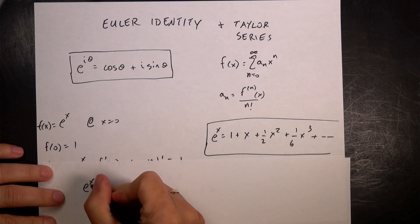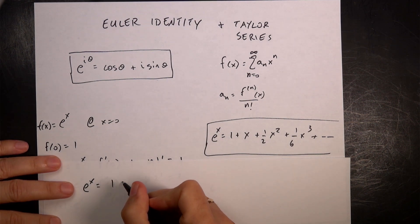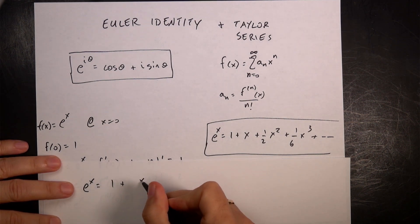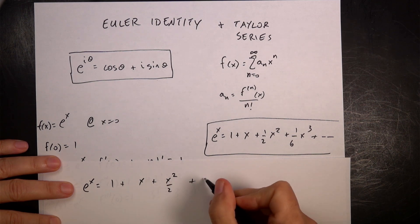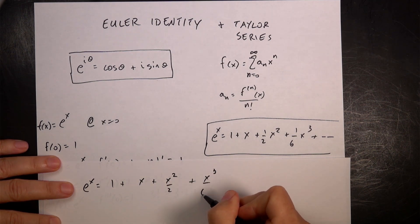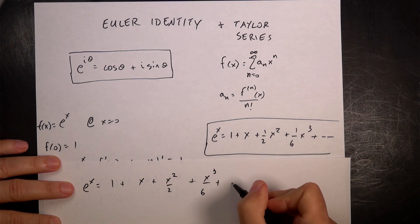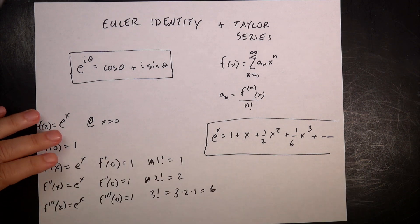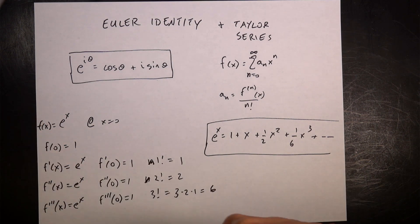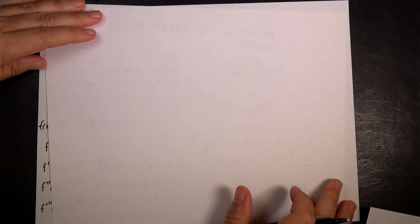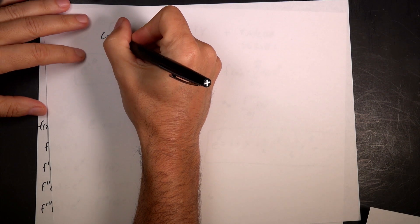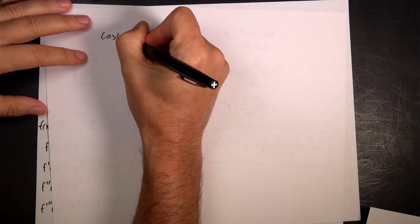Let me put that on another sheet: e to the x equals one plus x plus x squared over two plus x cubed over six plus dot dot dot. Now let's do cosine — I'm going to use x, and we'll change it to theta in a second. So cosine of x, that's f of x.